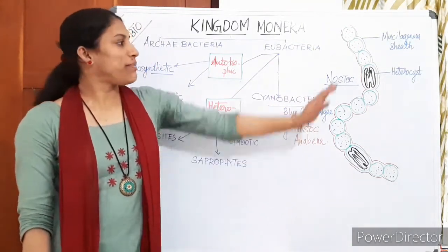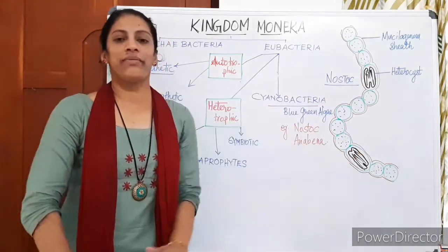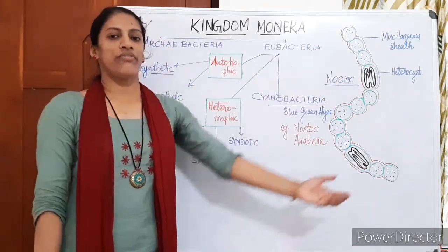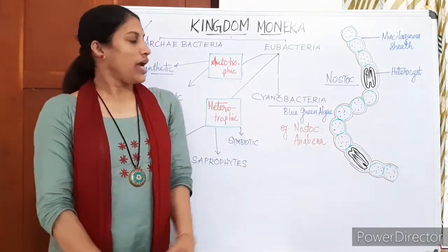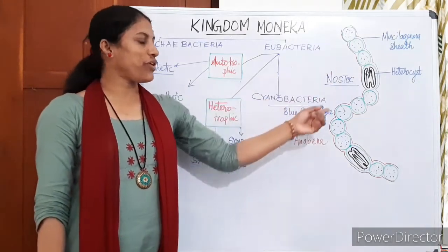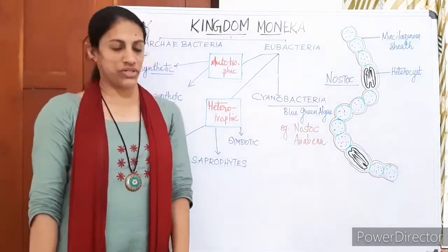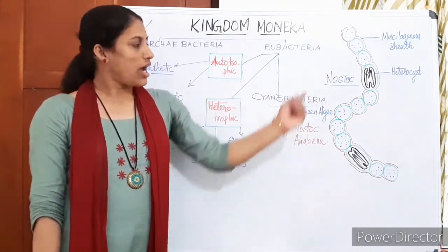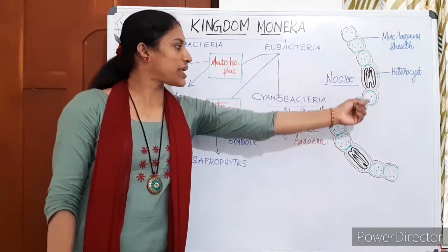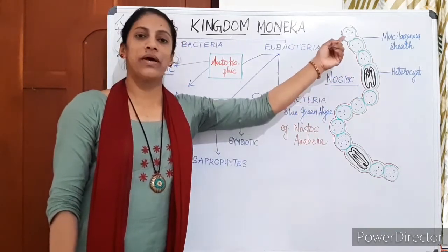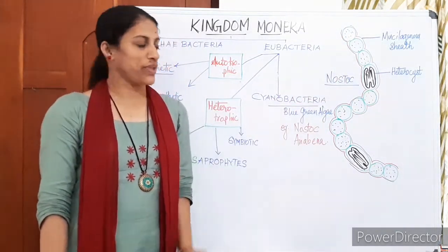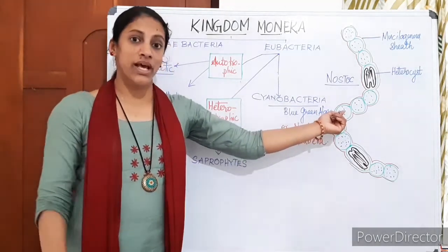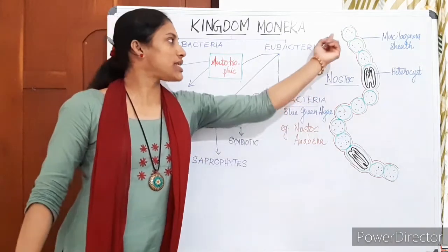The members form a filamentous colony. Single cells aggregate to form filament-like structures. Most members possess a beads-on-string like structure. A typical example is Nostoc, which has spherical cells resembling beads on a string pattern. The cell does not possess a true nucleus.